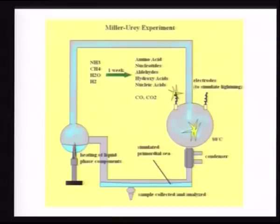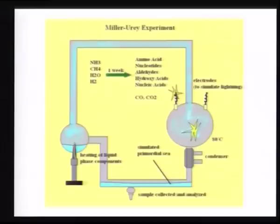Without experimentation we cannot take a theory to be true. An experiment devised by Urey and Miller took all the gases found in the primitive atmosphere and passed electricity through them — you can see the electrodes there — and then collected as fractions the products of combination of these chemical compounds. They were very happy to see that there were molecules which could give rise to the first biomolecules such as amino acids, sugars, nucleotides, and bases.